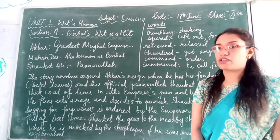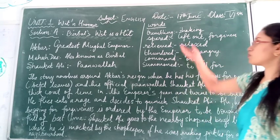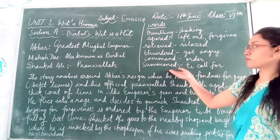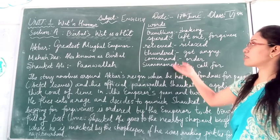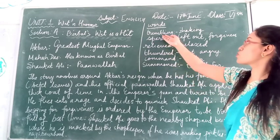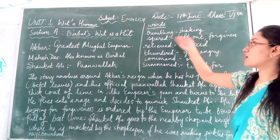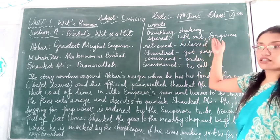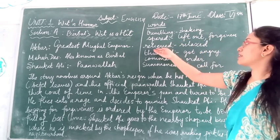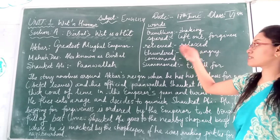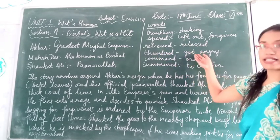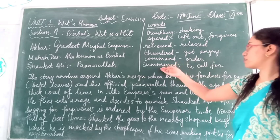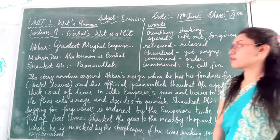Now to explain about the chapter, there are some difficult words from the first part of the chapter. 'Trembling' means shaking. 'Spared' means left alone or given forgiveness. 'Relieved' means relaxed. 'Thunder' means to get angry. 'Command' means to order. 'Summoned' means to call for something.